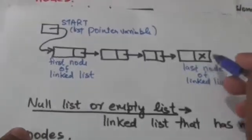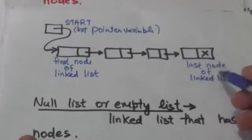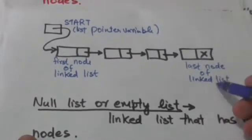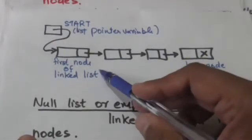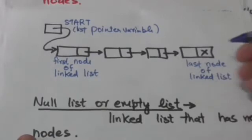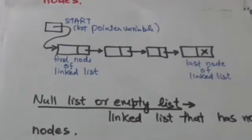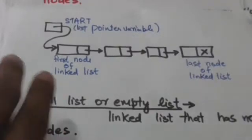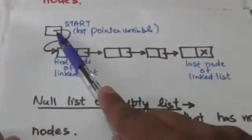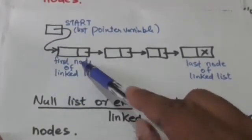The null pointer is an invalid address. In this diagram of linked list, the null pointer is denoted by a cross. A linked list has a list pointer variable which contains the address of the first node of the linked list.